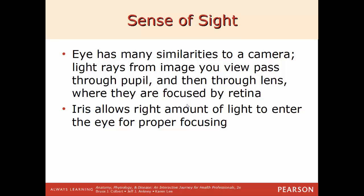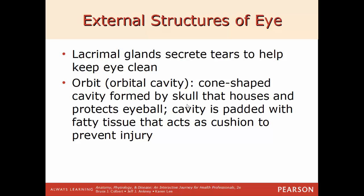First, we'll go into the sense of sight. Your eye has a lot of similarities to a camera — light rays from an image pass through the pupil, then through your lens, and focus on the retina. The iris is what allows the right amount of light to enter the eye for proper focusing, and it is also the colored part of the eye — green, brown, or blue eyes refer specifically to the iris.